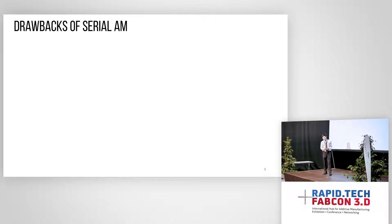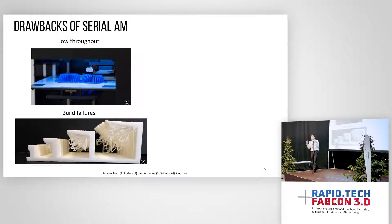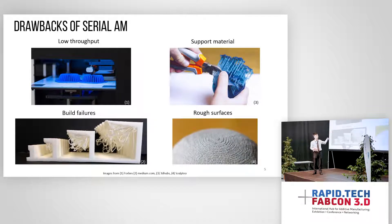We really want to develop these technologies to do away with all the drawbacks of serial additive manufacturing. For example, you have low throughput — it takes hours to print. Because of process constraints, you have print failures and have to iterate on your design and printing parameters. You also have support materials that need to be removed afterwards, and lastly, you might get a rough surface.